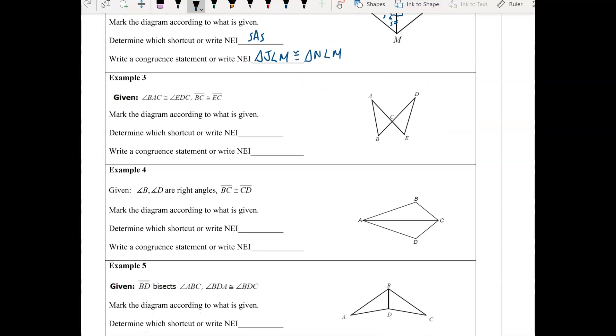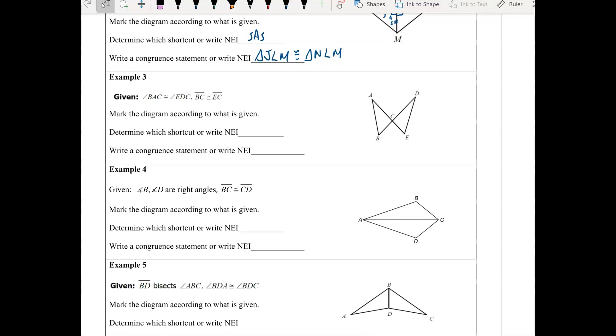Why don't we pause the video, try to mark this one, and see if you can figure out which shortcut this one is. Did you mark your diagrams? Did you get angle angle side? If so, great job. Let's look at the triangle congruent statement, so this is triangle ABC is congruent to triangle DEC.